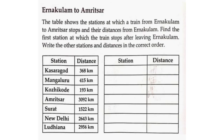Arnaqullam to Amritsar: The table shows the stations at which a train stops and their distances from Arnaqullam. Find the first station after leaving Arnaqullam. Stations listed: Kasaragod 368 km, Mangaluru 415 km, Khoi Code 193 km, Amritsar 3,092 km, Surat 1,522 km, New Delhi 2,643 km, Ludhiana 2,956 km.